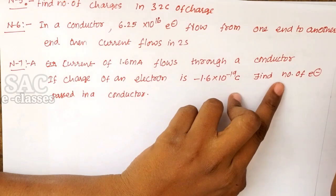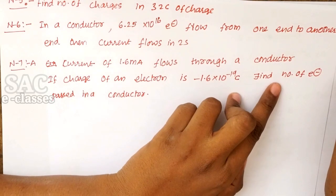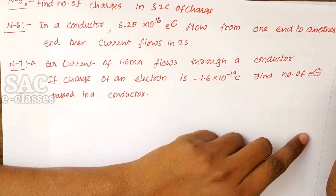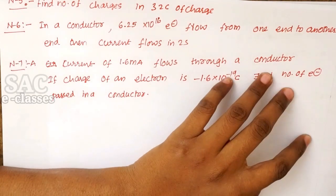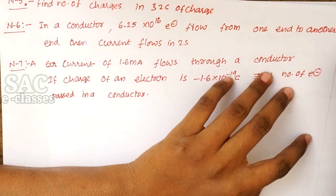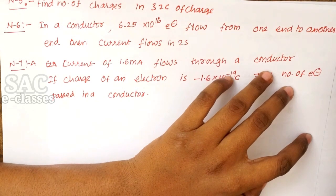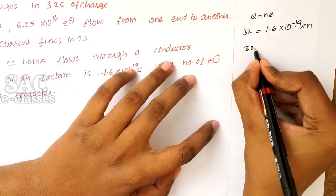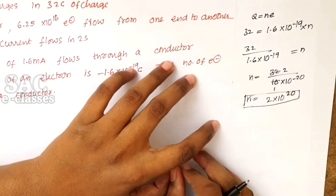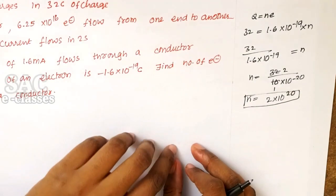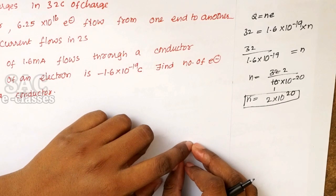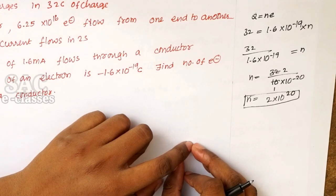Numerical 5: Find the number of charges in 32 coulombs of charge. Charges are electrons or protons with charge ±1.6 × 10⁻¹⁹ C. Using Q = NE, we can calculate N.